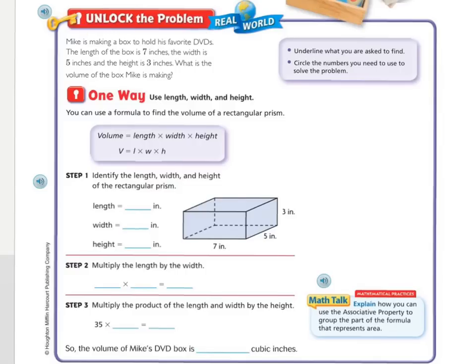Alright, let's unlock the problem. Mike is making a box to hold his favorite DVDs. The length of this box is 7 inches, the width is 5 inches, and the height is 3 inches. What is the volume of the box Mike is making? So first we're going to underline what you're asked to find. What is the volume of the box Mike is making?